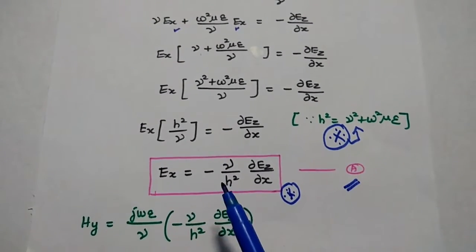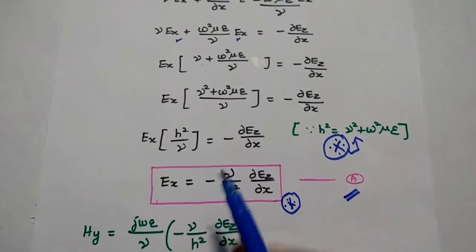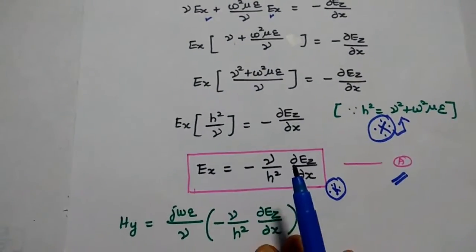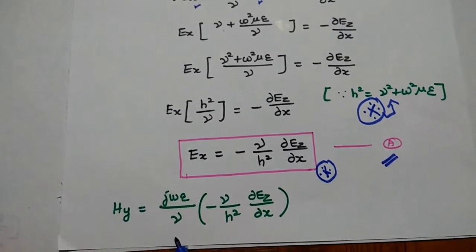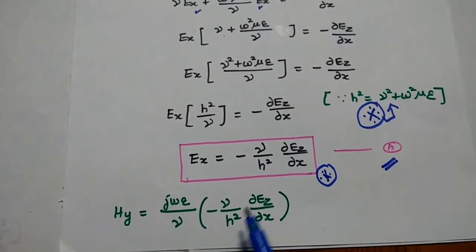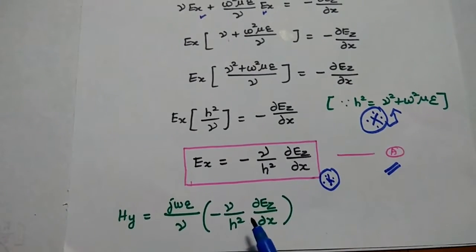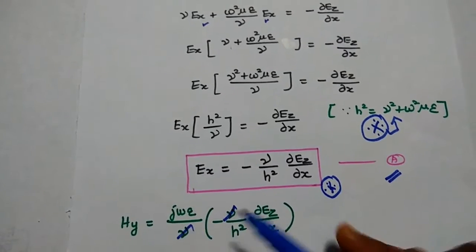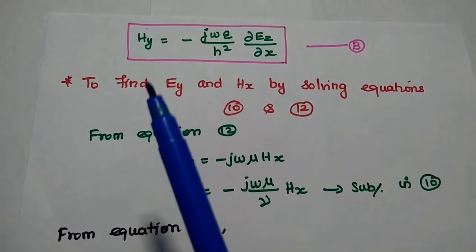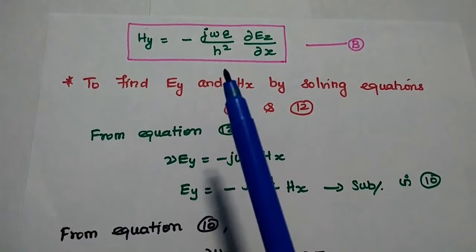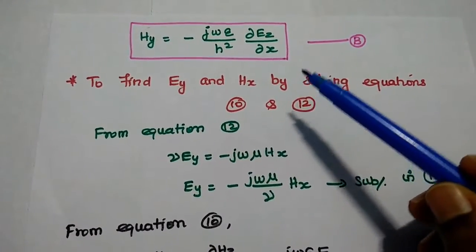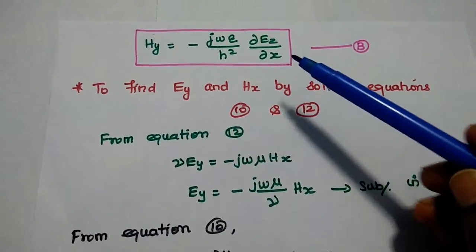Substituting Ex back into the Hy expression: Hy = (jωε/γ)·[−(γ/h²)·∂Ez/∂x]. The γ terms cancel, giving: Hy = −(jωε/h²)·∂Ez/∂x. This is the Hy component expressed in terms of Ez.